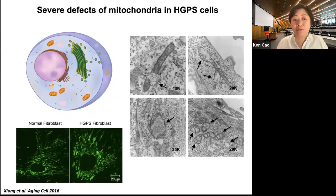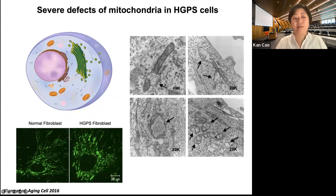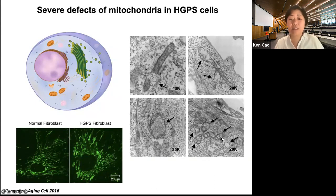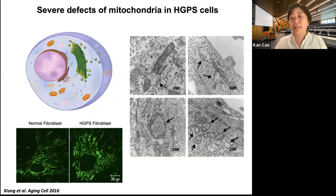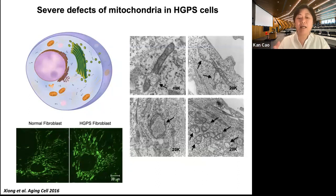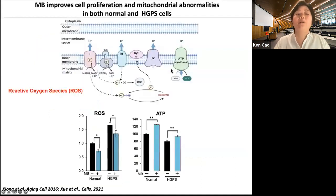High-resolution transmission electron microscopy further revealed defects in progeria cell mitochondria — some are branched, some broken, and some are dead ghost mitochondria. The question I asked at that time was: can we use a mitochondria-targeting drug to help the mitochondria in progeria cells? If so, that mitochondria drug might be translated into a treatment for progeria. That was the thinking behind the methylene blue story.